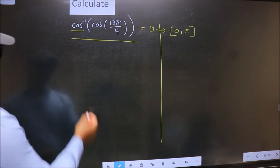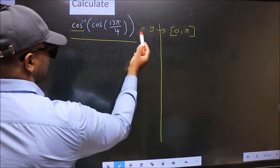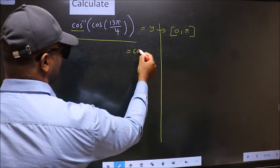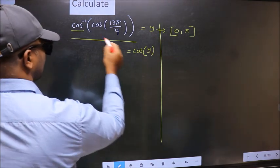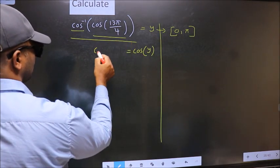Next. Shift cos inverse to the other side. It will become cos Y. And this no change.